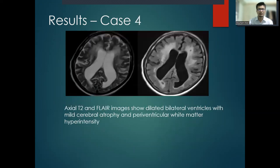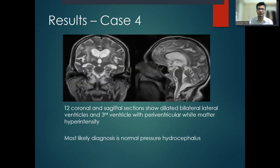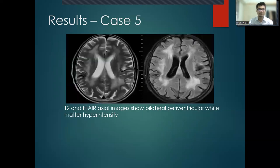Axial T2 and FLAIR images show bilateral ventricles dilated with mild cerebral atrophy and periventricular white matter hyperintensity. T2 coronal and sagittal sections show dilated lateral ventricles and third ventricle with periventricular white matter hyperintensity. The most likely diagnosis is normal pressure hydrocephalus.